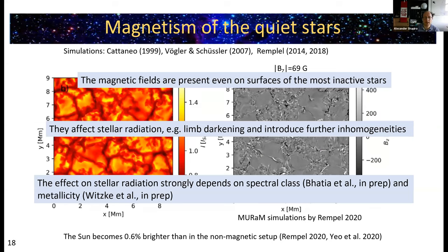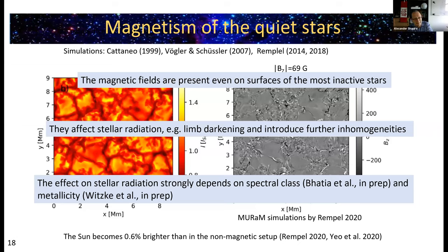The takeaway is that magnetic fields are present on surfaces of even the most inactive stars and they affect stellar radiation. For example, limb darkening is crucial for the retrieval of planetary radii. This magnetic field introduces further inhomogeneity, which is crucial for analyzing profiles from transit spectroscopy. Simulations of the surface for various stars show that the efficiency of the small-scale dynamo strongly depends on the spectral class and on metallicity, so we will have different effects depending on the fundamental parameters of the stars we observe.